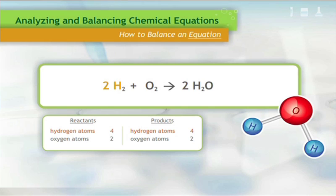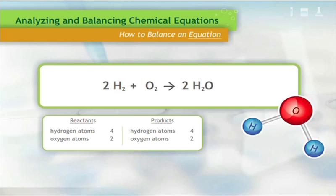Multiplying the coefficient of two by the subscript of two — 2H₂ — you now have four hydrogen atoms. Both sides of the equation now have four hydrogen atoms and two oxygen atoms. Each element on the reactant side has the same number as the same element on the product side. Therefore, the equation is balanced.